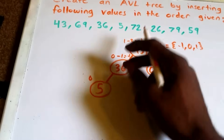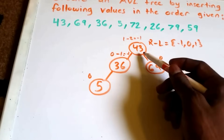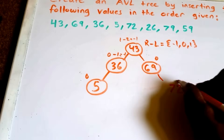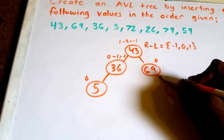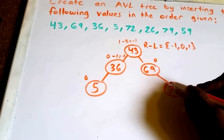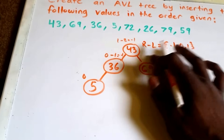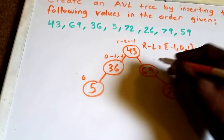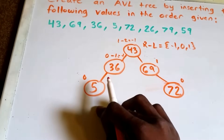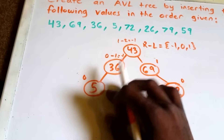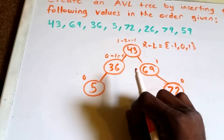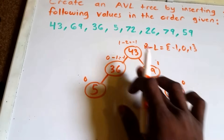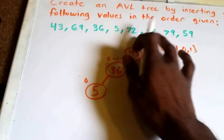Next we're going to insert the value 72. Since 72 is greater than 43 and greater than 69, we insert it to the right of 69. Node 72 has a balance factor of 0, and 69's balance factor changes to 1 minus 0, which is 1. For node 43, the balance factor becomes right side 2 minus left side 2, which equals 0.